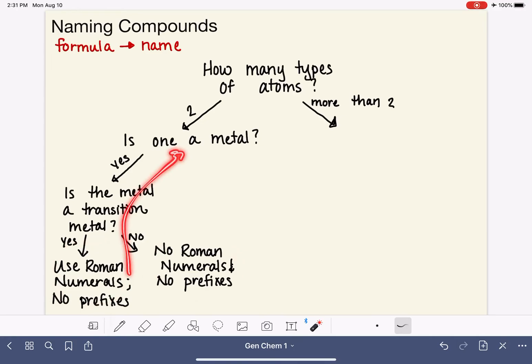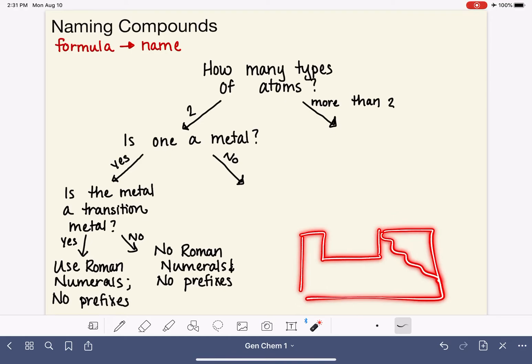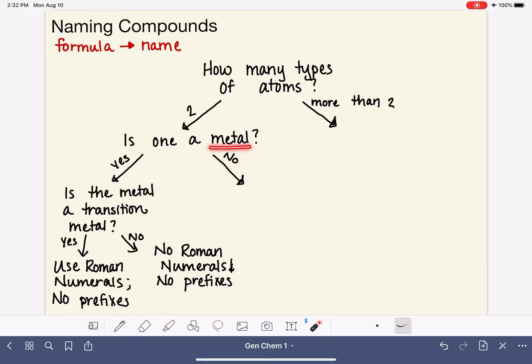If we have two types of atoms and we asked ourselves 'is one of them a metal?' and the answer is no, that means we have two nonmetals. The jagged line on the periodic table divides metals and nonmetals, and this is the area where we find nonmetals. If you have no metals at all, just a collection of nonmetals, that means you're dealing with a molecular compound. You are going to use prefixes: mono-, di-, tri-. No Roman numerals - those are only used on metals. If you're not sure how to use prefixes, go back to that video.